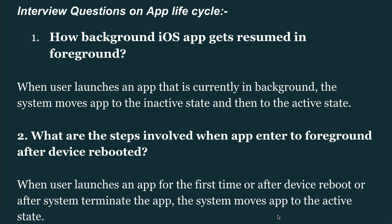Now for interview questions on app life cycle. First question: How does a background iOS app get resumed in the foreground? When the user launches an app that is currently in the background, the system moves the app to the inactive state and then to the active state. Second question: What are the steps involved when an app enters the foreground after device reboot? When a user launches an app for the first time, after device reboot, or after the system terminates the app, the system moves the app to the active state.